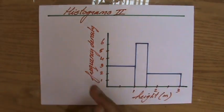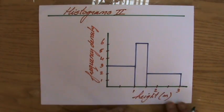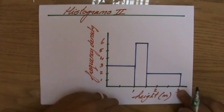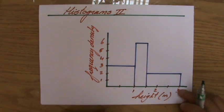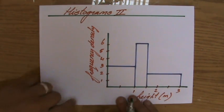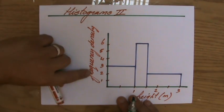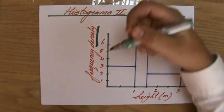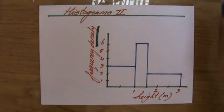But most importantly, let's say we're talking about the height of goats. So the height on the x-axis, and on the y-axis it doesn't say frequency, but it says frequency density. And that word is very important.